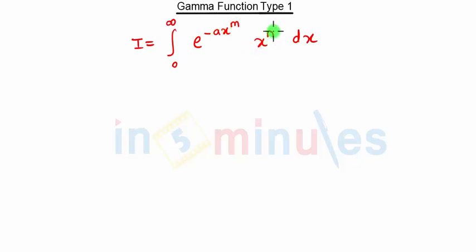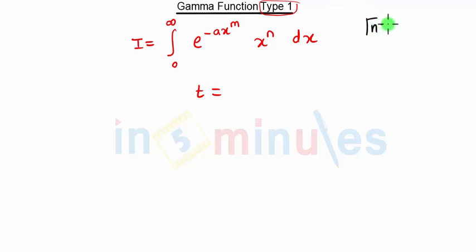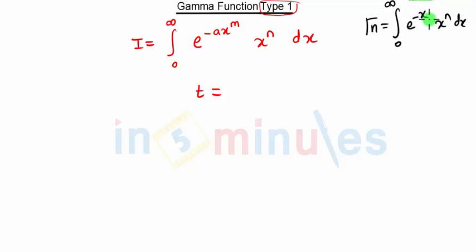So in Type 1, our equation will have e raise to minus a·x raise to m, into x raise to n, dx. We know that our general gamma equation — gamma of n — is given by integration of 0 to infinity, e raise to minus x, times x raise to n, dx. In that standard form, we do not have any constant, no other variable, no x raise to m or x raise to 4 — no extra terms.